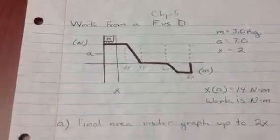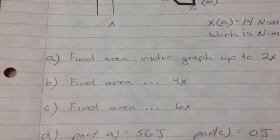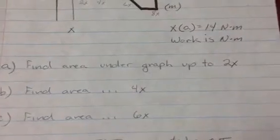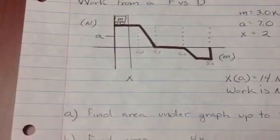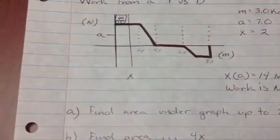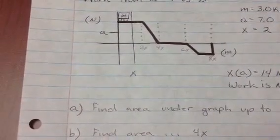Okay, again, Chapter 5, Part 2. We're trying to find the area under the graph up to the first distance. Simply take the two vectors there, the vertical and the horizontal, and multiply them together.